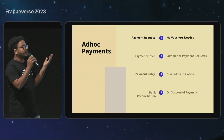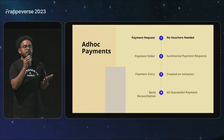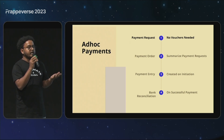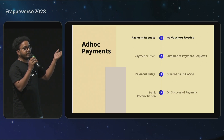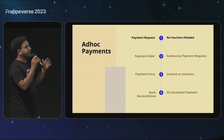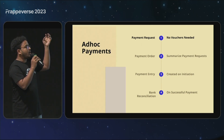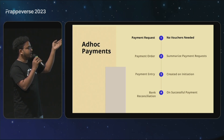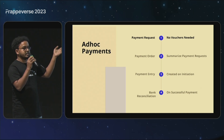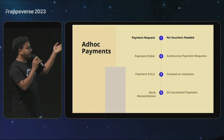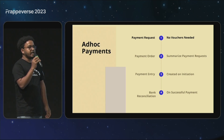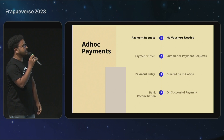For ad hoc payments where you do not have a purchase order or purchase invoice and just want to make a payment, the same process is followed — you start with a payment request. Multiple such payment requests are aggregated into a payment order, and when the payout happens, the payment entry is automatically generated and bank reconciliation happens automatically. We'll have a quick demo of this.